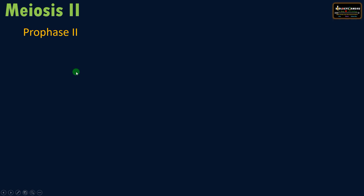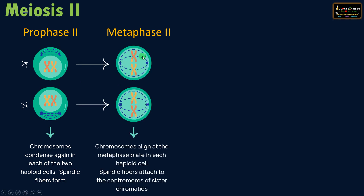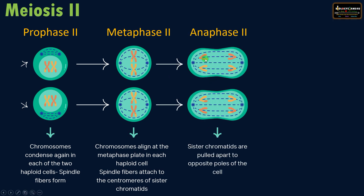The second division is meiosis two. The first stage is prophase two, where chromosomes condense again in each of the haploid cells and spindle fibers form, just like prophase one. Then there is metaphase two, where chromosomes align at the center — the metaphase plate — in each haploid cell, and spindle fibers attach to the centromeres of the sister chromatids.